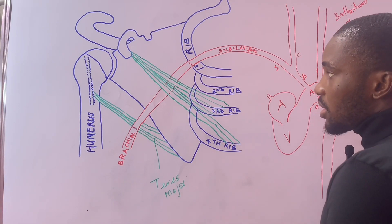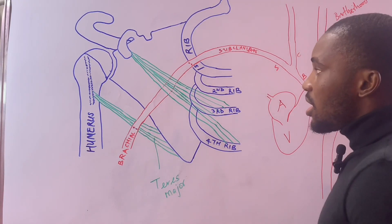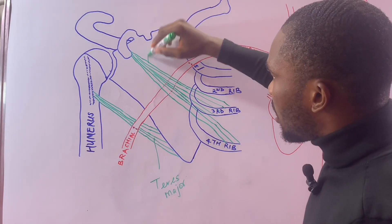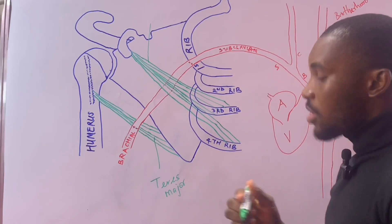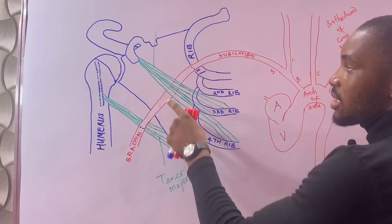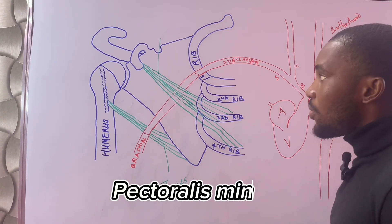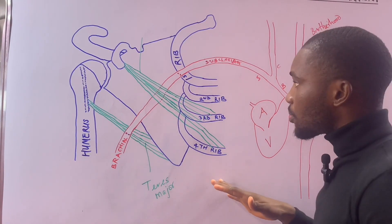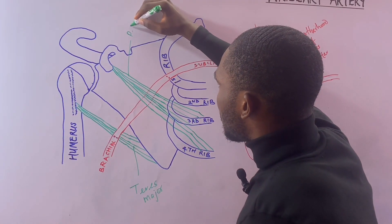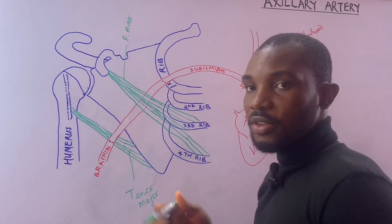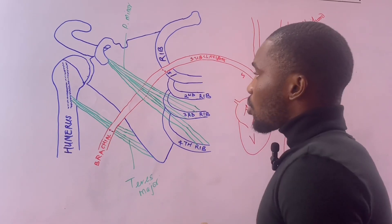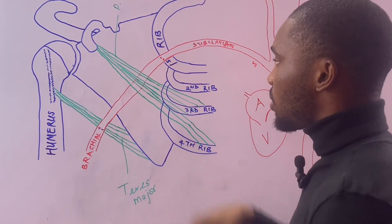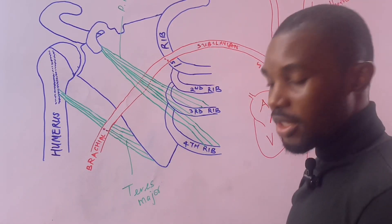The axillary artery is within the axilla but is further divided into different parts. There is a muscle here called the pectoralis minor — if you haven't watched the video on the axilla, you should, as it will help. The pectoralis minor fans out from the coracoid process to insert into the third, fourth, and fifth ribs. It runs anteriorly over the axillary artery, so the artery is found behind the pectoralis minor — that's why dotted lines are used for that part.